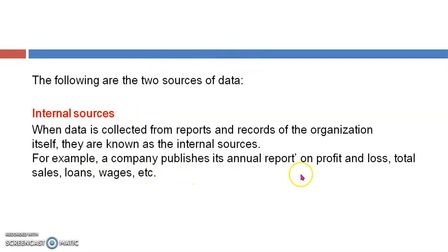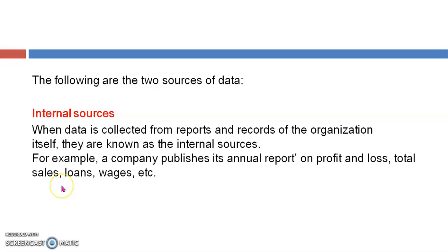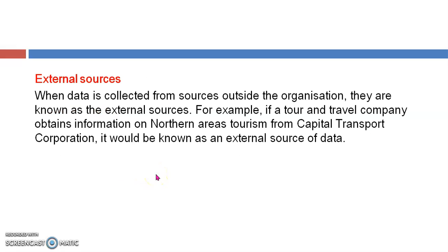For example, a company publishes its annual reports on profit, loss, total sales, loans, and wages. A company publishes its internal reports every year or every few months, showing profit, loss, total sales, loans taken, and wages. This kind of data source is called an internal source.